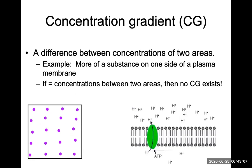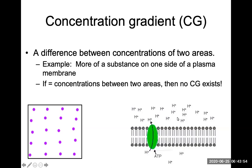We first need to talk about what a concentration gradient is — this is a difference between concentrations of two areas. For example, there will be more of a substance on one side of a plasma membrane than the other, and if there are equal concentrations between the two areas, then no concentration gradient exists. Looking at the drawing of the plasma membrane on the lower right of the screen, we see there are more hydrogen ions on the exterior of the cell than on the interior, so a concentration gradient exists.